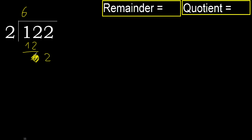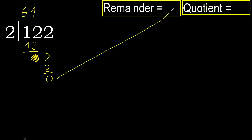Eliminate 0 on this side. Bring down 2. 2 multiplied by 2 is 4 — it is greater. Multiplied by 1 is 2 — it is not greater. Subtract: 0. Next — there is no more number, therefore finish.